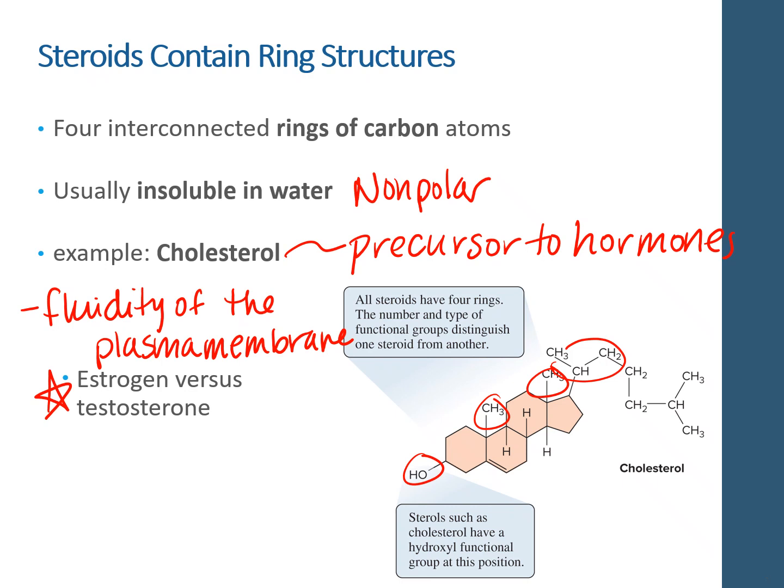One example of the difference in functional groups is estrogen and testosterone. These are hormones that provide male and female characteristics. There is only one functional group that is different between the two. They both have cholesterol as their basis and then just have slightly modified functional groups to produce very different functions in the living organism.